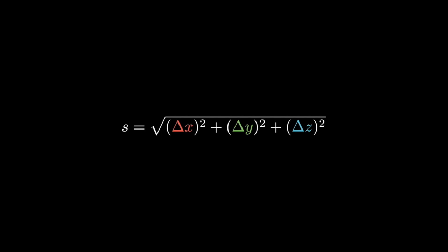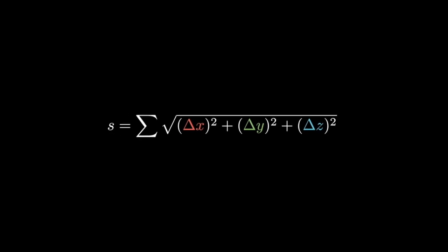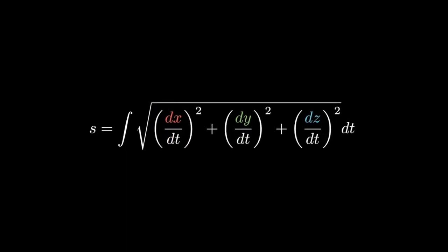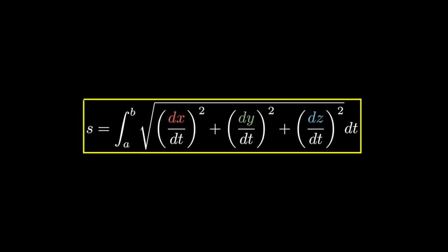Again, we take smaller and smaller segments to get a closer and closer representation of the graph. So we get an integral. The integrand of our arc length function becomes square root of dx dt squared plus dy dt squared plus dz dt squared. This is a lot easier to work with as everything is unified under t.